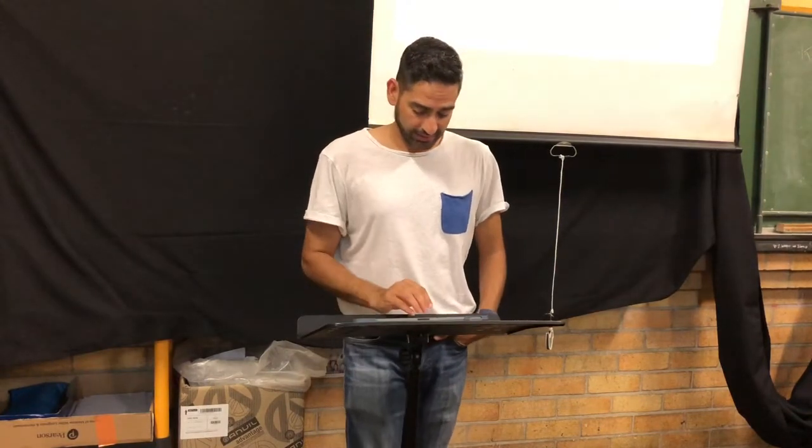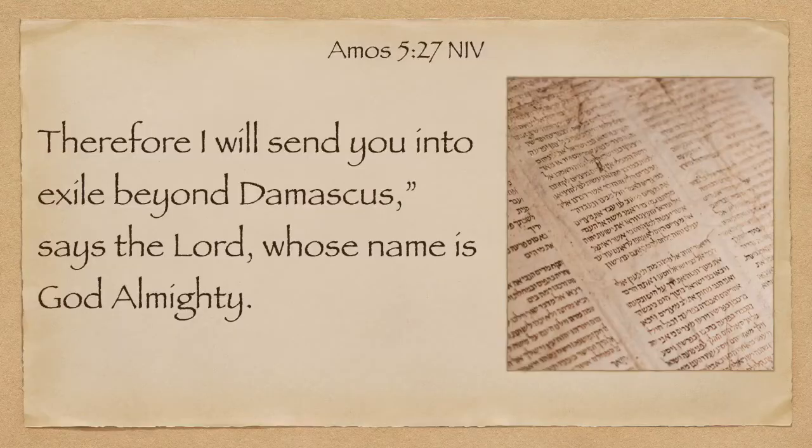Let's look at a few examples. Amos, who was from the southern kingdom but commissioned by God to preach to the northern kingdom, gives this message in Amos 5:27: 'Therefore I will send you into exile beyond Damascus, says the Lord, whose name is God Almighty.' Amos's job was to go into the northern kingdom and tell them their time was up. Roughly 30 years after this proclamation, they went into exile in 722 BC.